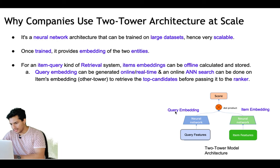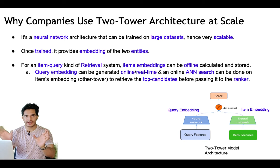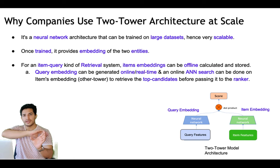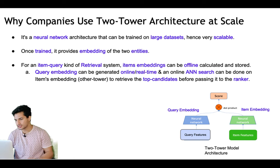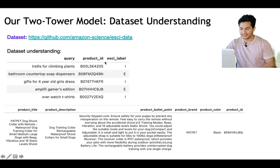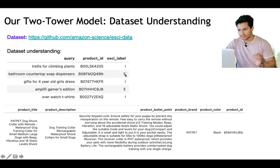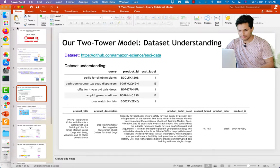Once we do the ANN search we get the top candidates which can be passed to a ranker for ranking. Recommendation systems have two phases: retrieval and ranking. In retrieval, the relevant items out of millions are retrieved, and they are ranked in the ranker. In this video we will focus on the retrieval phase. The dataset we'll use is a free open-source dataset from Amazon containing queries, which items appeared for those queries, and whether they were relevant or irrelevant.